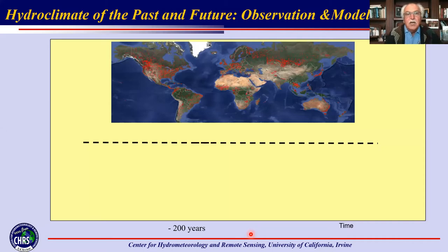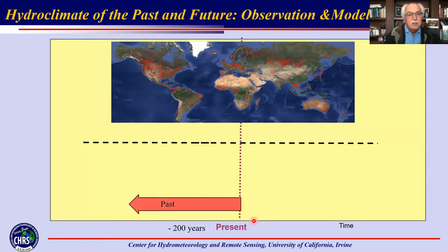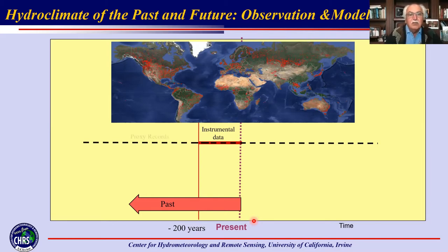If we look at the history of observations, taking the present time as a reference point and looking at the past — the billions of years of our planet's history — we don't have too many observations. The only period where we have had instruments developed to measure runoff, rainfall, and temperatures extends to maybe several hundred years. Prior to that, we rely on isotope chemistry of Earth materials, such as ice cores, to figure out climate conditions up to 200,000 years ago.